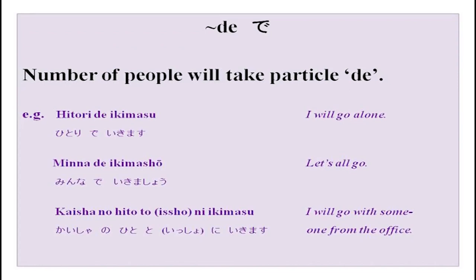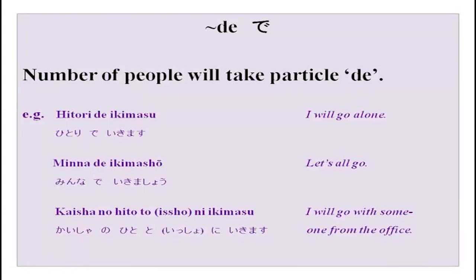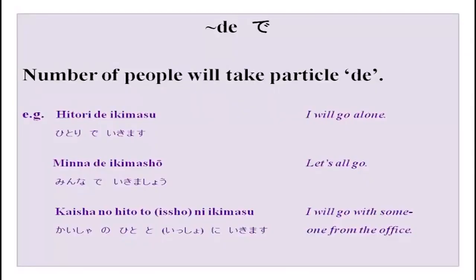We have done many uses of 'de': for transport, for a group of things, today with 'Nihongo de.' Another way to use 'de' is with numbers of people: 'hitori de' — alone, 'futari de' — two people, 'sannin de' — three people, 'minna de' — with everyone. Examples: 'hitori de ikimasu' — I will go alone; 'minna de ikimashou' — let us all go; 'kaisha no hito to issho ni ikimasu' — I will go with someone from the office.